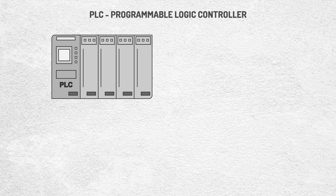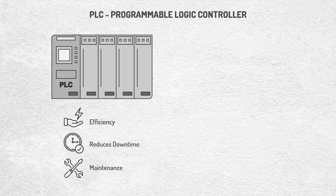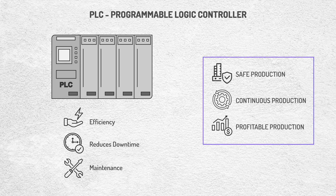Thanks to this, it improves efficiency, reduces downtime, and simplifies maintenance, which translates into safer, more continuous, and more profitable production. Understanding how PLCs work and their importance in industrial systems not only helps us appreciate the technology that drives the world, but also prepares us to make smarter decisions in increasingly automated environments.